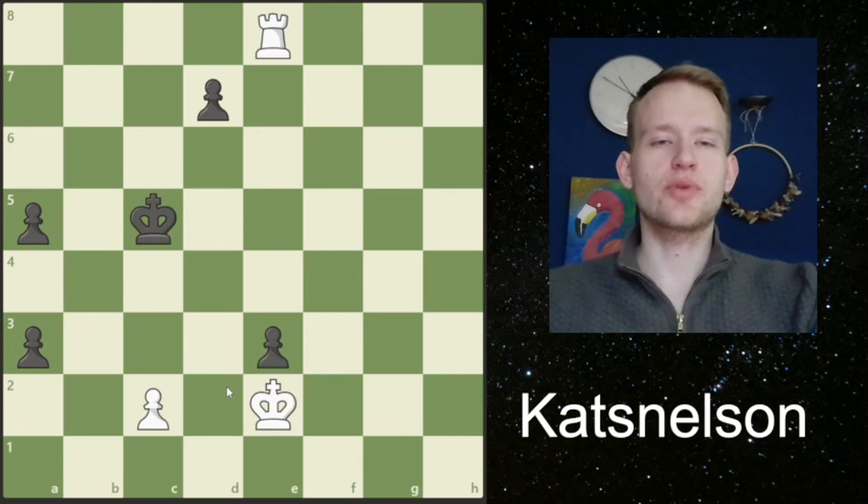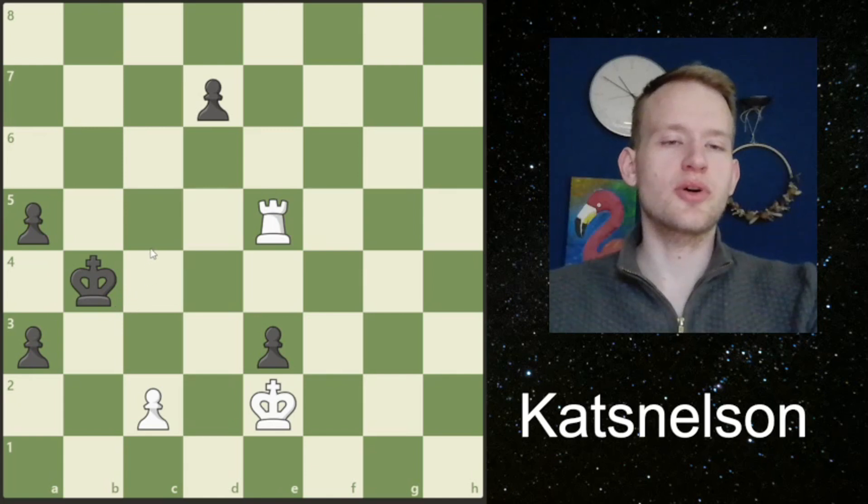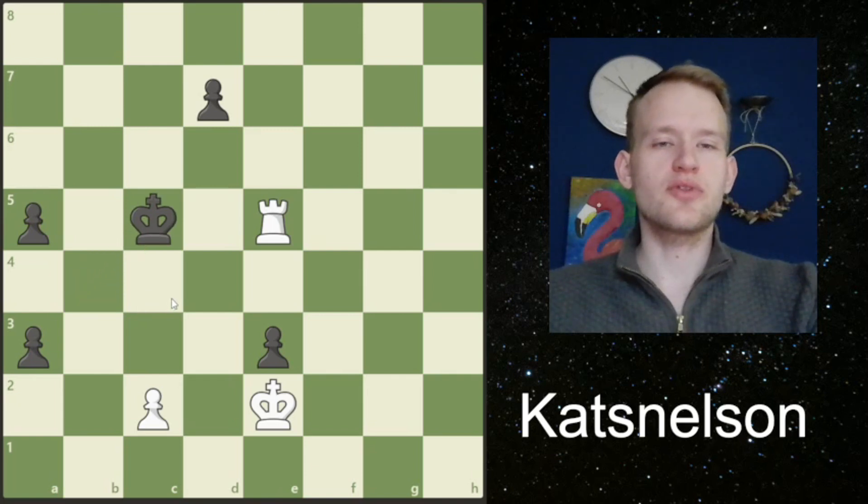What else could we try? Well, maybe we could try to give a check, either here or here, but in either case, black just plays king to b4. This is an improvement of black's king position. So both checks are kind of dumb.